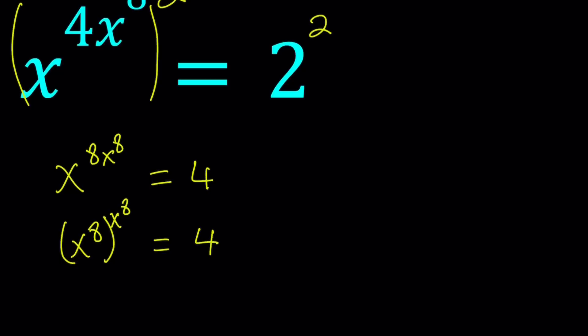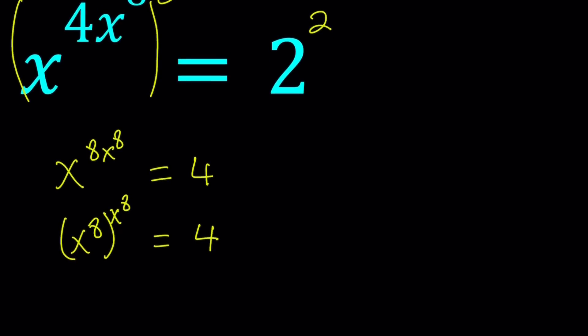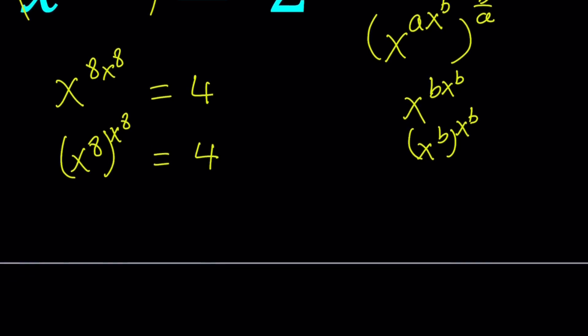So anytime you get an expression like this, like let's say you have something like x to the power a, x to the power b, then you're basically trying to multiply a by something to make it equal to b. So in this case, it will be raise both sides to the power b over a. Because a will cancel out and you'll end up with x to the power b, x to the power b. And that can be written as x to the b to the power x to the b. In this case, b is 8.